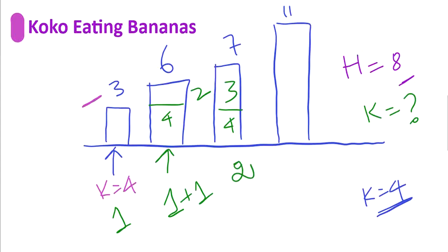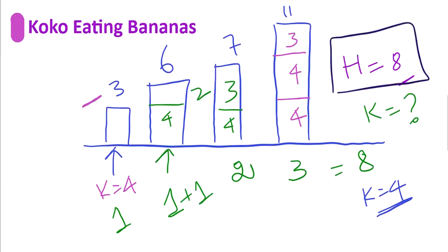Finally, moving to the last pile which has 11 bananas. In the first hour she takes 4, the next hour another 4, and finally 3 more — so it takes 3 hours to complete this pile. If you calculate all hours: 1 + 2 + 2 + 3 = 8 hours total, which is exactly the maximum hours Koko has before the guards return. So it is possible to eat all the bananas within 8 hours with speed k equals 4 — that is our output.